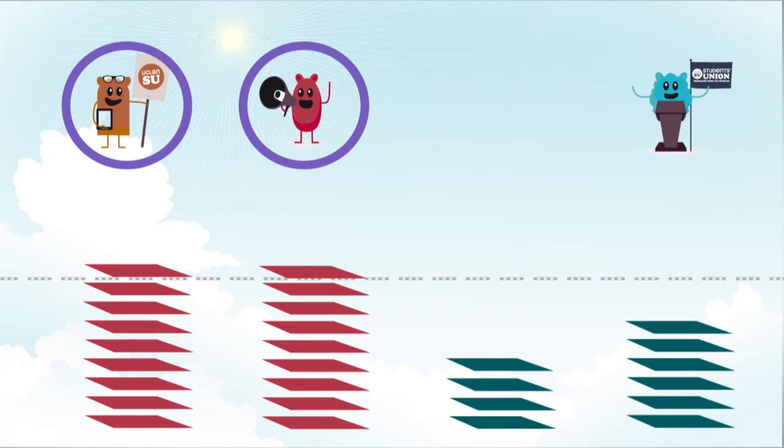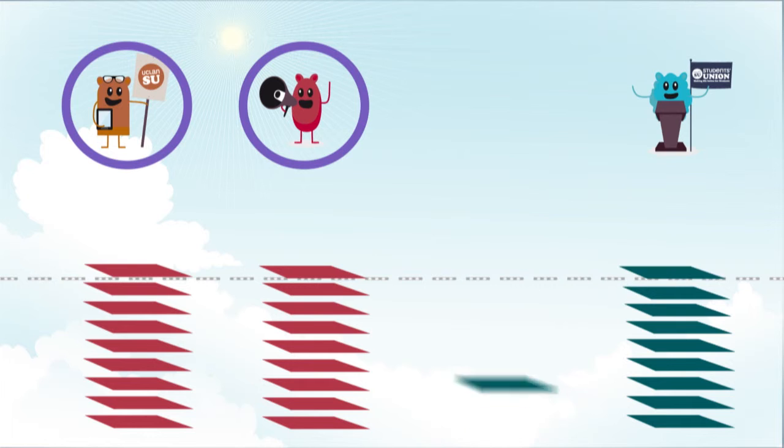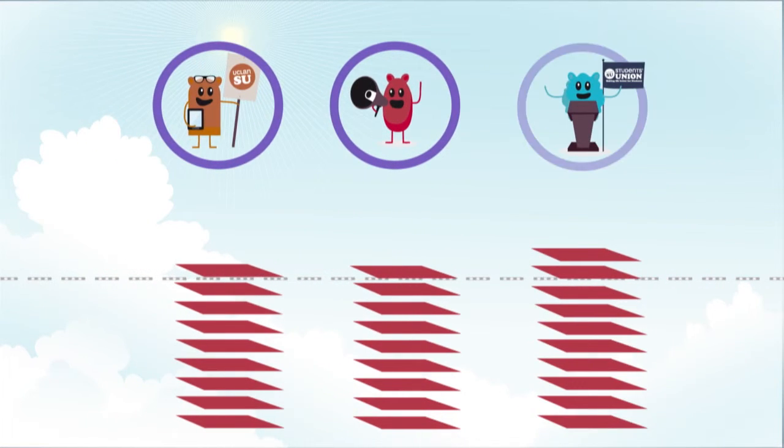But there is still one seat to fill, so the lowest polling candidate is eliminated and those votes go to his voters' second choices who are as yet unelected. Alice is the last candidate to get elected.